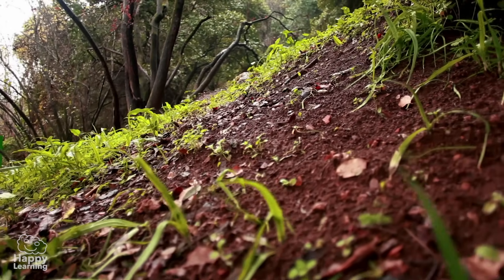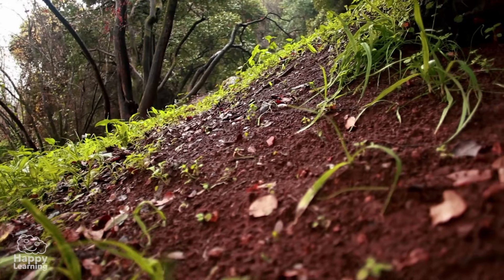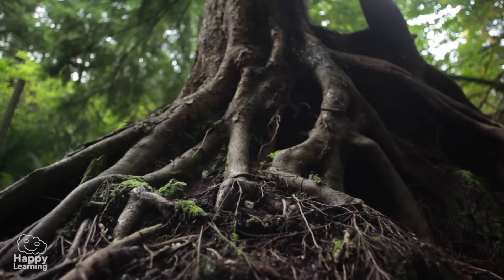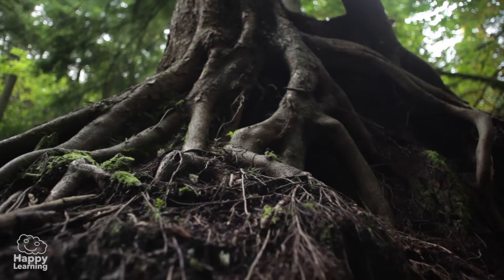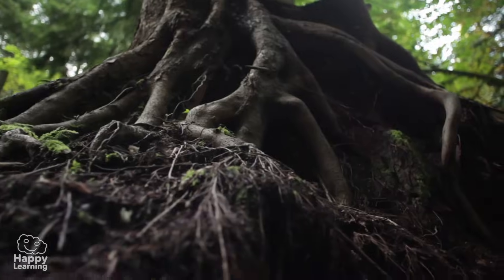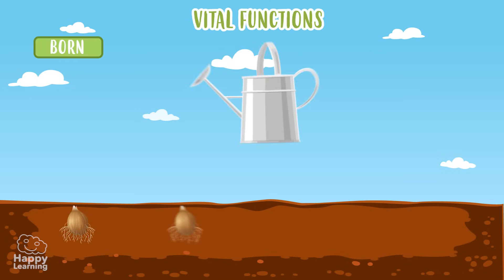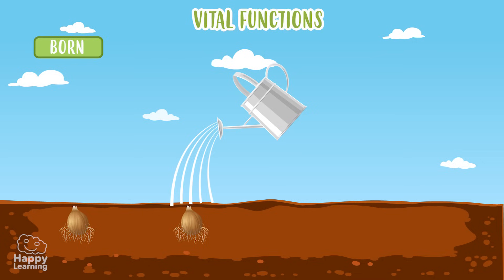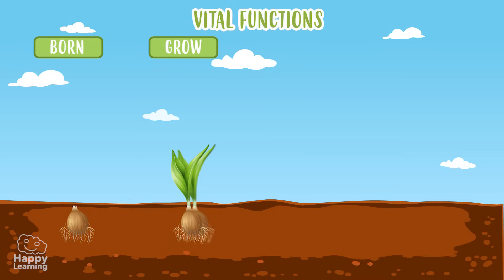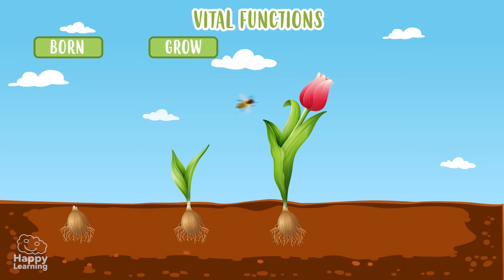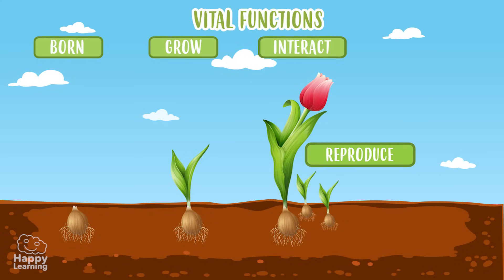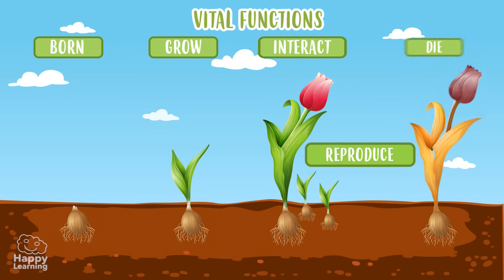You already know that plants can't move from one place to another. As you can see, the great majority are held to the ground by roots. But they fulfil the vital functions of all living things. They are born, they grow, they interact, reproduce, and die.